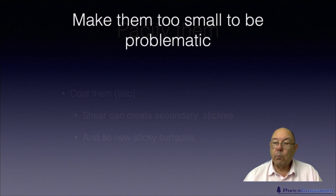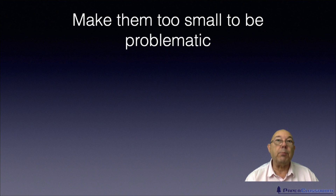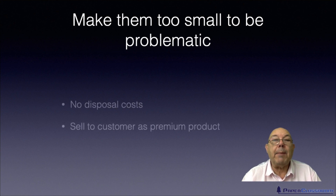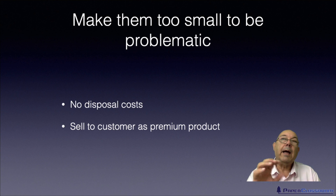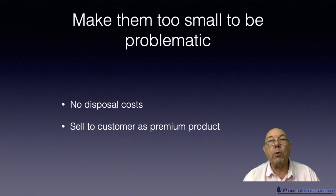Finally, one approach is to make the stickies too small to be problematic. We find ways of either keeping them small so that they don't agglomerate to become big stickies, or we break down big stickies to make them small enough so they can't do any damage. If they're too small they won't cause damage. And there's two advantages of this: because you're keeping them in the system and they're too small to do damage, they will get incorporated into the sheet.